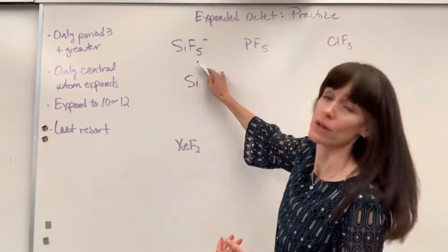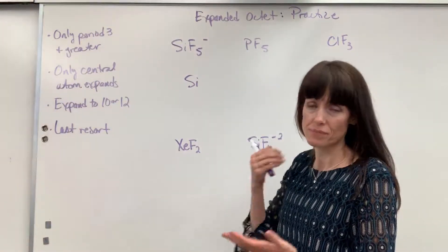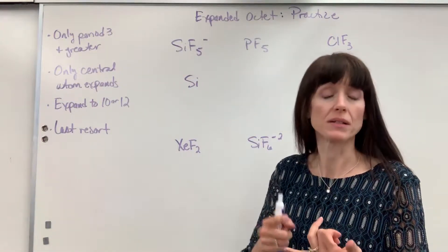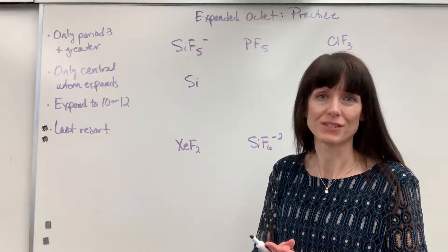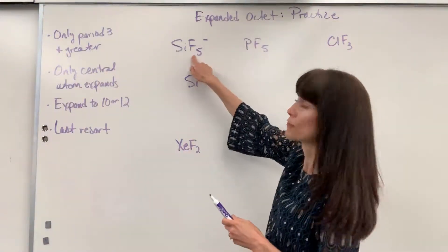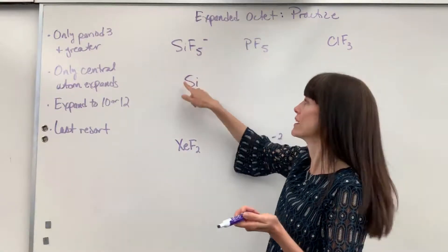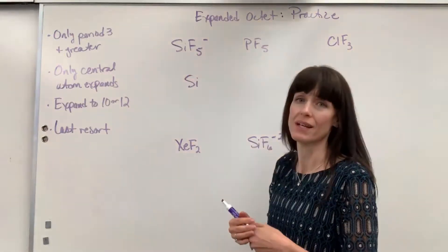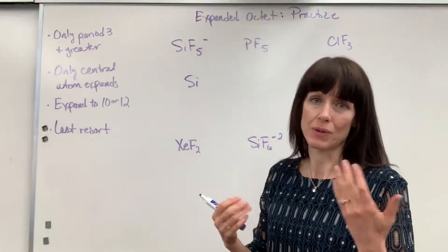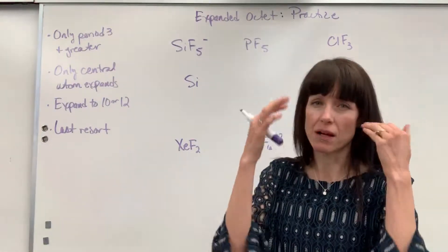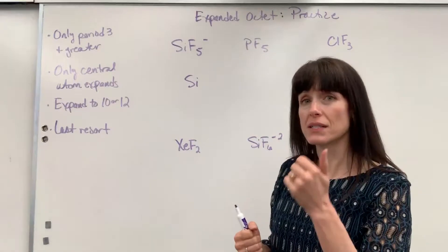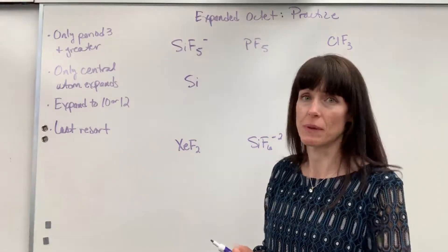Fluorine can't do a coordinate covalent bond. The most common ones to do coordinate covalent bonds are sulfur and oxygen, because they only need two electrons. Sulfur needs one electron. If I shared two electrons with one fluorine, it would move it from seven to nine, and that wouldn't be an octet. So there's my thought process going through the steps: regular octet — no; coordinate covalent — no; it's got to expand.